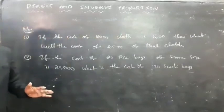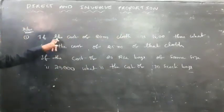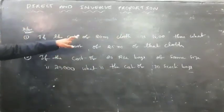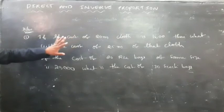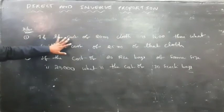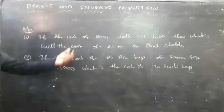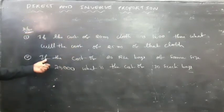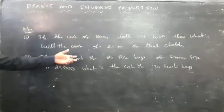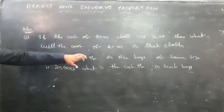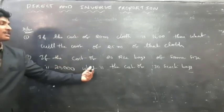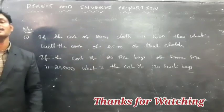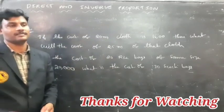Here are the homework problems. If the cost of 20 meters of cloth is 16,600 rupees, what is the cost of 25 meters of cloth? If the cost of 20 rice bags of the same size is 20,000 rupees, what is the cost of 30 such bags?